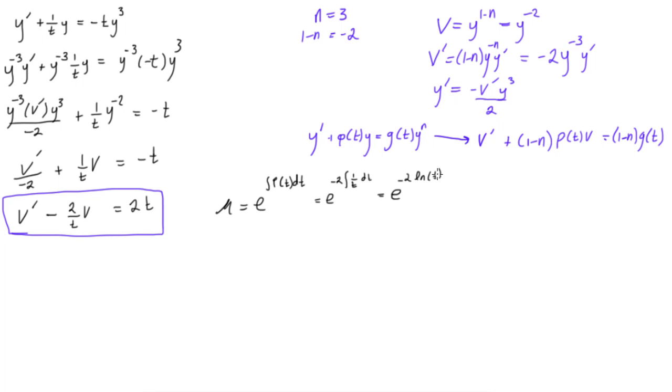Again, so we get e is equal to minus 2 times ln of t. And this all reduces to, using our exponent rules, we'll just say that mu is equal to 1 over t squared.